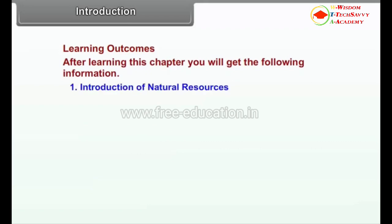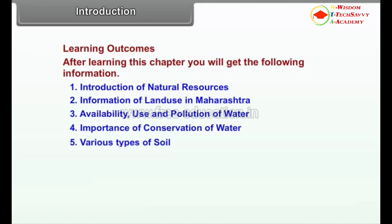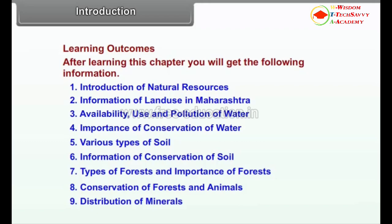After learning this chapter, you will get the following information: 1. Introduction of Natural Resources, 2. Information of Land Use in Maharashtra, 3. Availability, Use and Pollution of Water, 4. Importance of Conservation of Water, 5. Various Types of Soil, 6. Information of Conservation of Soil, 7. Types of Forests and Importance of Forests, 8. Conservation of Forests and Animals, 9. Distribution of Minerals, 10. Need of Conservation of Minerals.